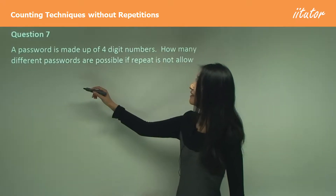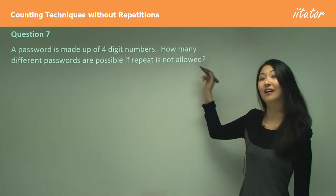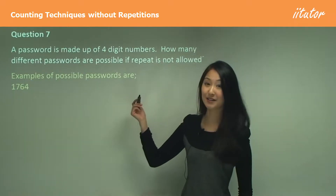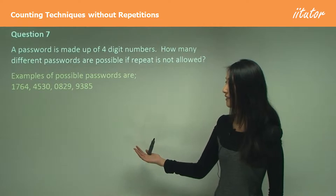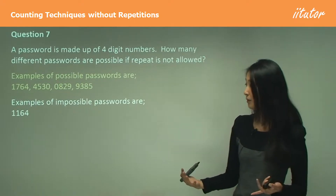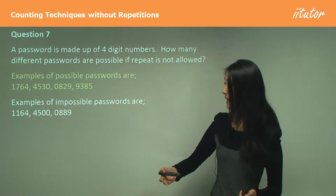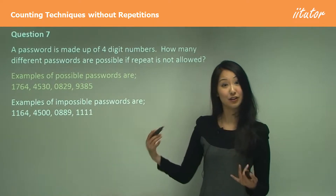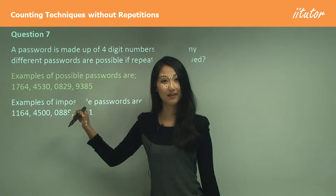Here we have a password made up of four digit numbers. How many different passwords are possible if repeats are not allowed? Examples of possible passwords are 1764 or 4530 — you can start with zero. Examples of passwords that aren't acceptable are ones where a digit is repeated, like having two ones or two zeros, since once a number has been used it can't be used again.